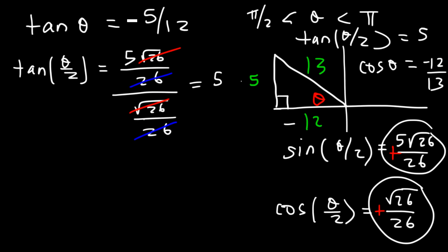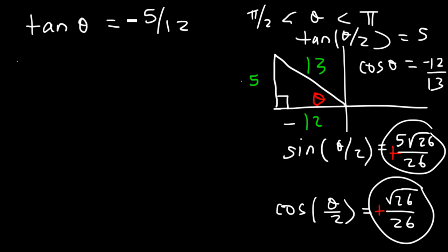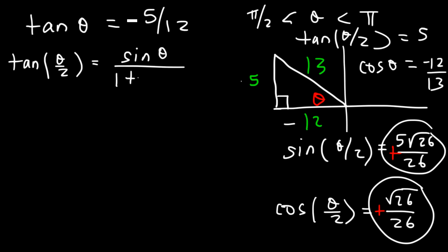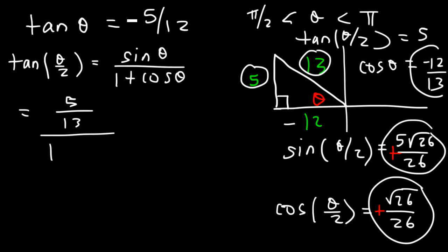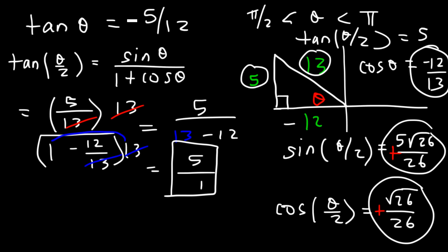Let's confirm using the alternate formula: sine θ divided by (1 plus cosine θ). Sine θ is 4/5 — wait, here sine θ is 5/13 (opposite over hypotenuse) and cosine θ is −12/13. Multiplying everything by 13: the numerator is 5, and the denominator is 13 minus 12, which is 1. So the answer is 5, confirming that tangent(θ/2) = 5.